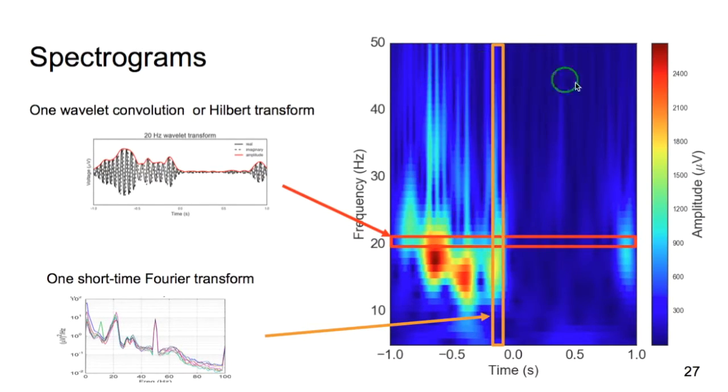So this is the plot of our time frequency data. So we have both time, frequency, and power, or amplitude, depending on how it was calculated.